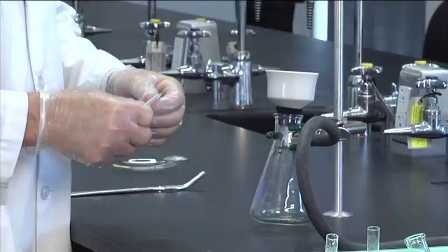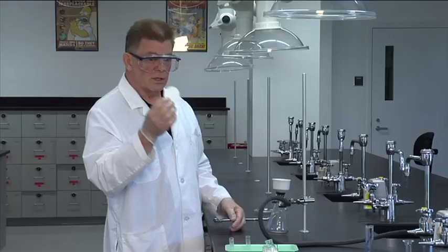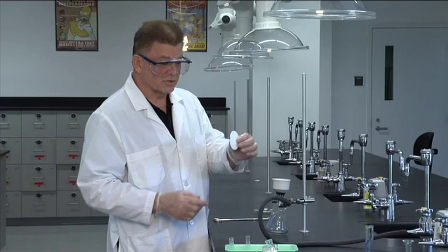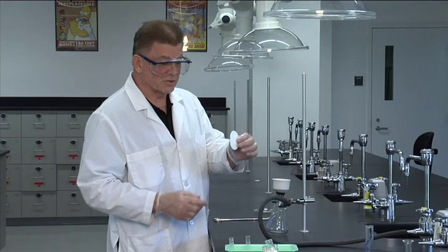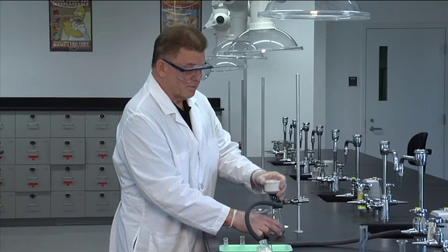You have to use the right size of the filter paper. This would be the right size for this Buchner funnel. Sometimes students will run out of this and rather than go to the stock room and ask for more filter paper, they'll take a large piece of filter paper and try to jam it in there. And that doesn't work because it doesn't make a tight seal. So don't be lazy. Get the right size piece of filter paper. Make a tight seal.